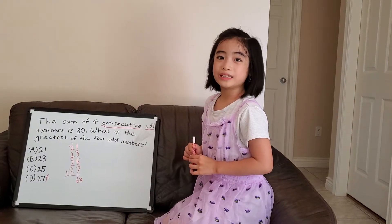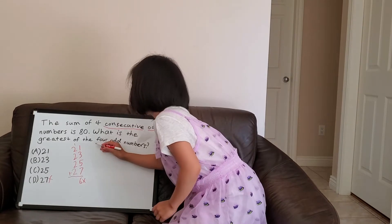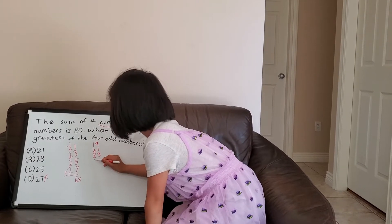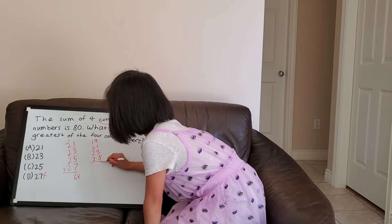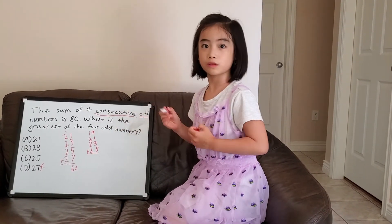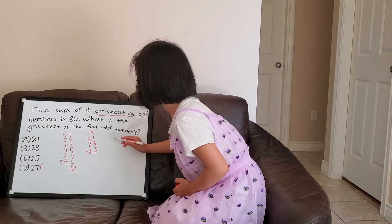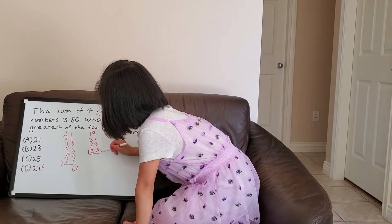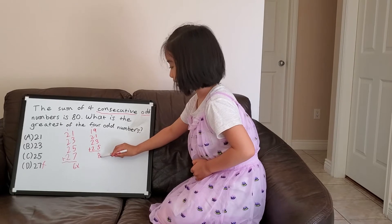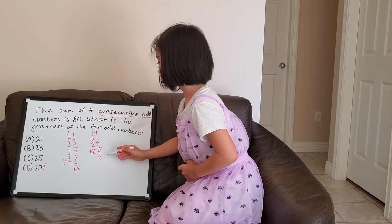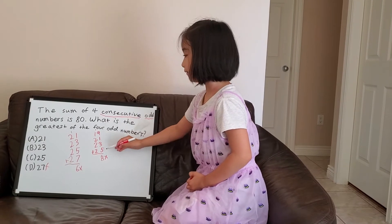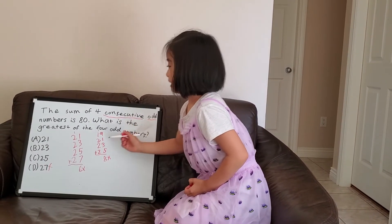We can go one number lower. The set becomes 19, 21, 23, 25. Adding the ones digits: 9 plus 1 equals 10, 10 plus 3 equals 13, 13 plus 5 equals 18. The ones position digit is 8, not 0, so this is also definitely not the answer. If the largest number is 25, its sum cannot be 80.